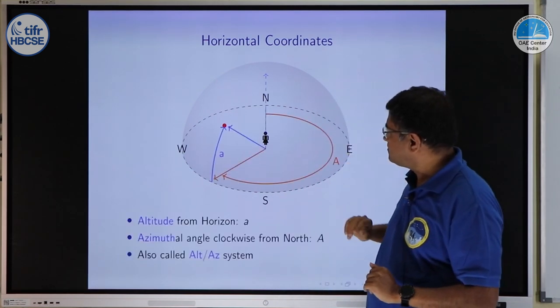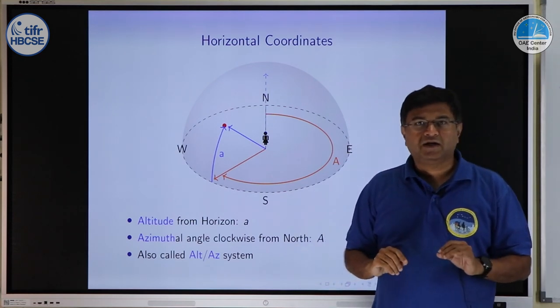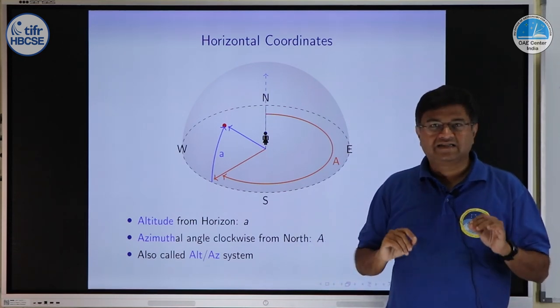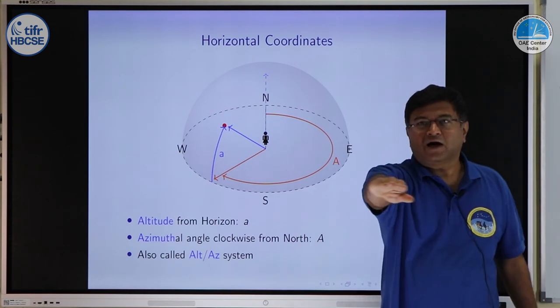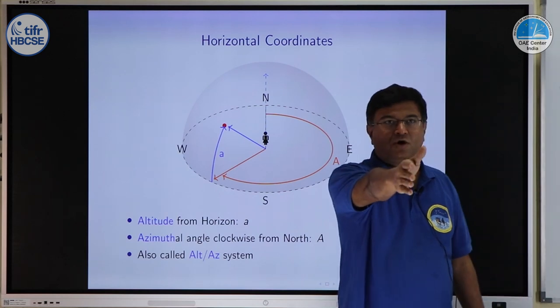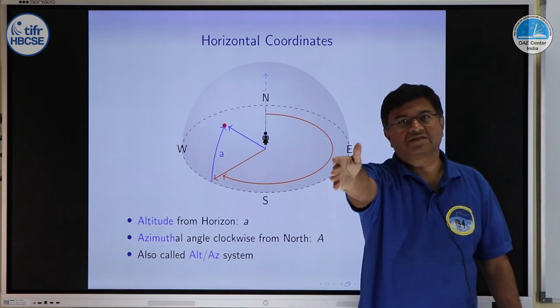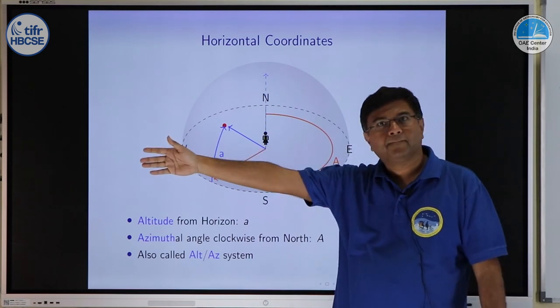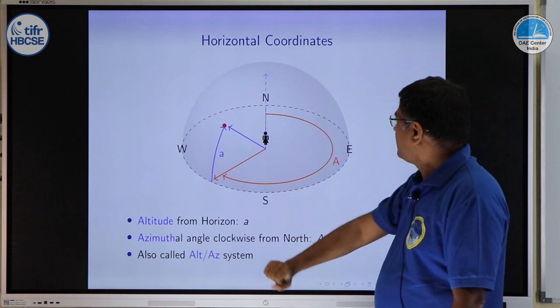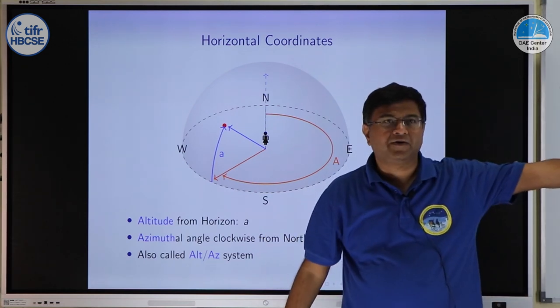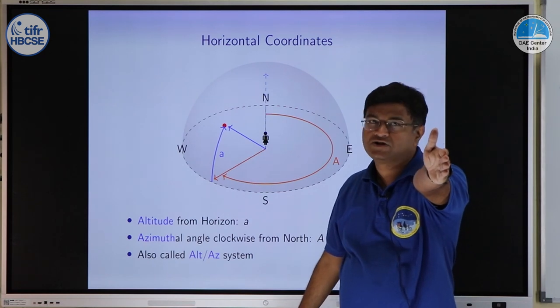What we will do is we use two coordinates. First coordinate is what we call as azimuth. Azimuth of a star is measured along the ground, we start from north, north is your 0 and then start turning towards east, east is your 90, then south is 180 and then if you keep turning west is 270, back to north 360 or 0.